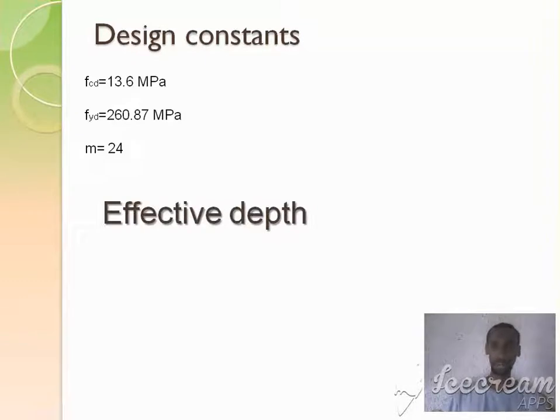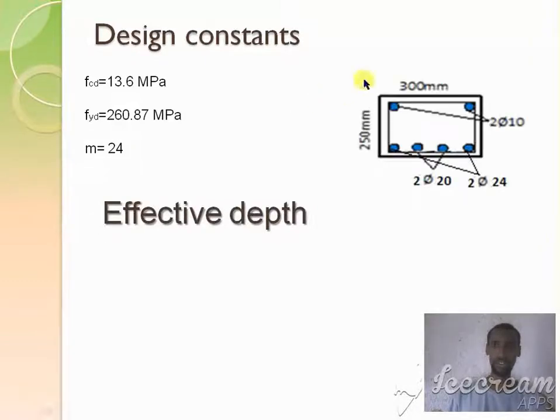Now let's proceed to the second step, it is effective depth determination. We can look at this cross section. So there are a number of reinforcements in number and in bar diameter. The larger one is located at the bottom, so we expect that this is under positive moment. We might not know, so effective depth determines another.